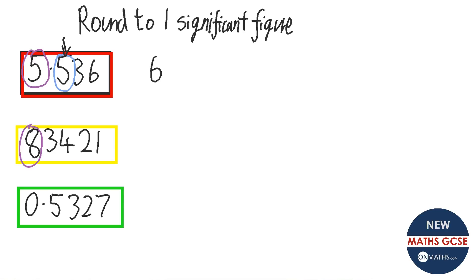For the next question, that 8 there is the number we're looking for. But that 3 will decide whether that 8 turns into a 9. Because this number is less than 5, that 8 stays the same. However all the other numbers turn into 0. 1, 2, 3, 4 zeros.